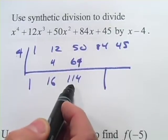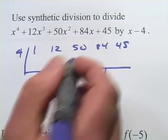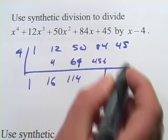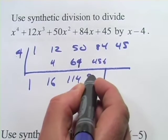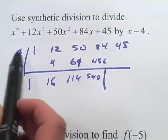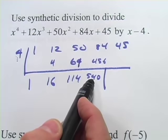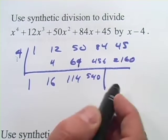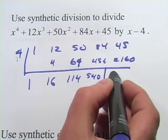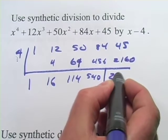Now we're going to multiply that by 4, and we get 456. And add down the column, I think that's 540. We multiply that by 4, and we get 2160. And then we add down that column, and we get 2205.